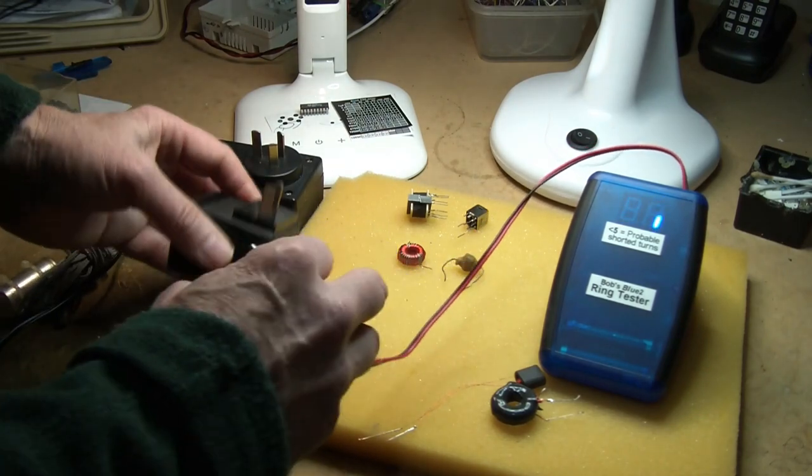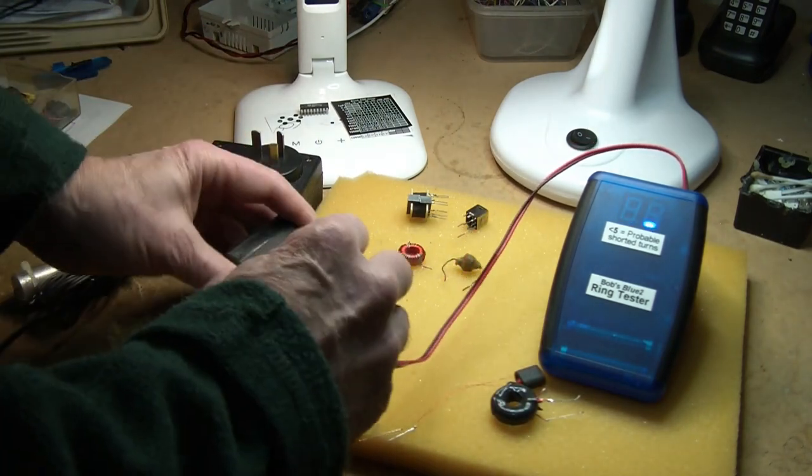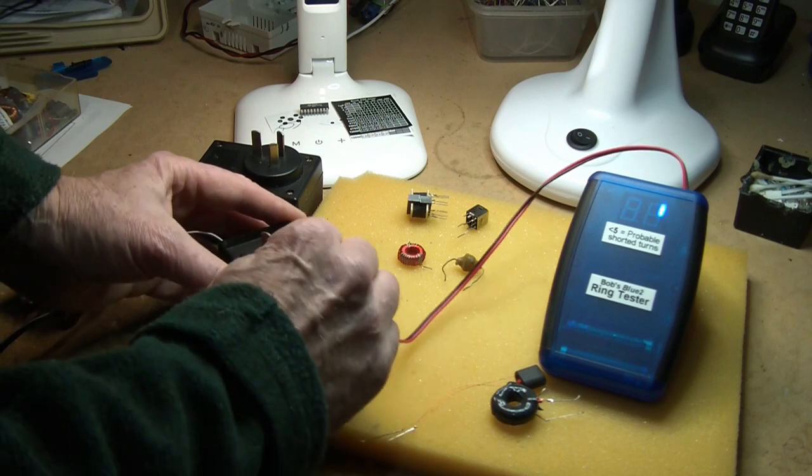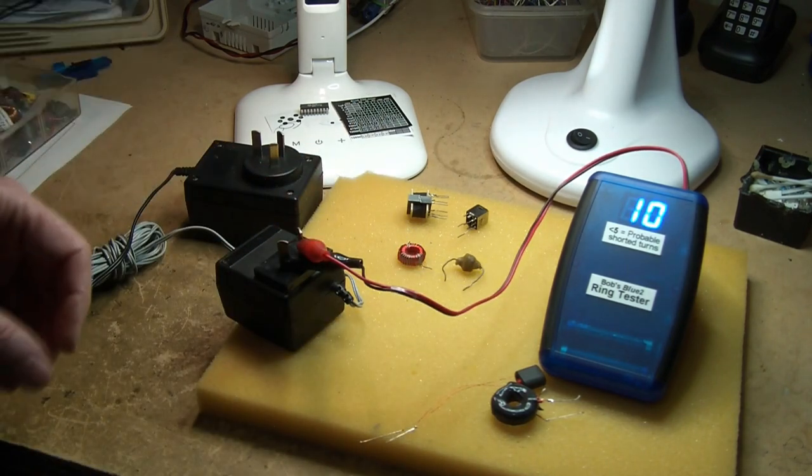Unfortunately, all I've got at the moment that's available is these what you call wall warts, which have iron core transformers in them.